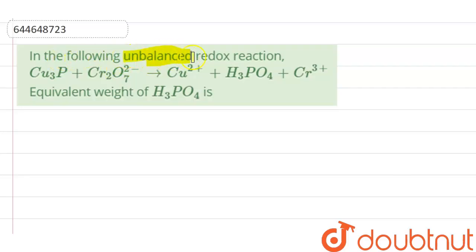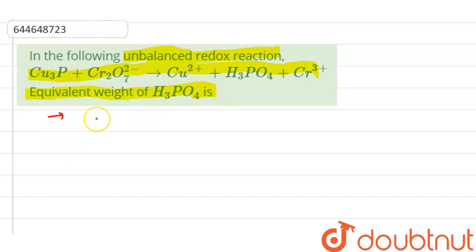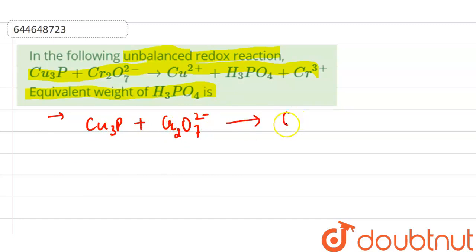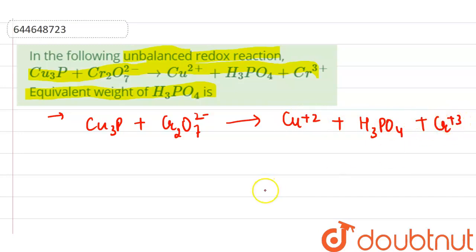Our question is: in the following unbalanced redox reaction, we have to calculate the equivalent weight of H₃PO₄. The reaction is: Cu₃P + Cr₂O₇²⁻ → Cu²⁺ + H₃PO₄ + Cr³⁺.